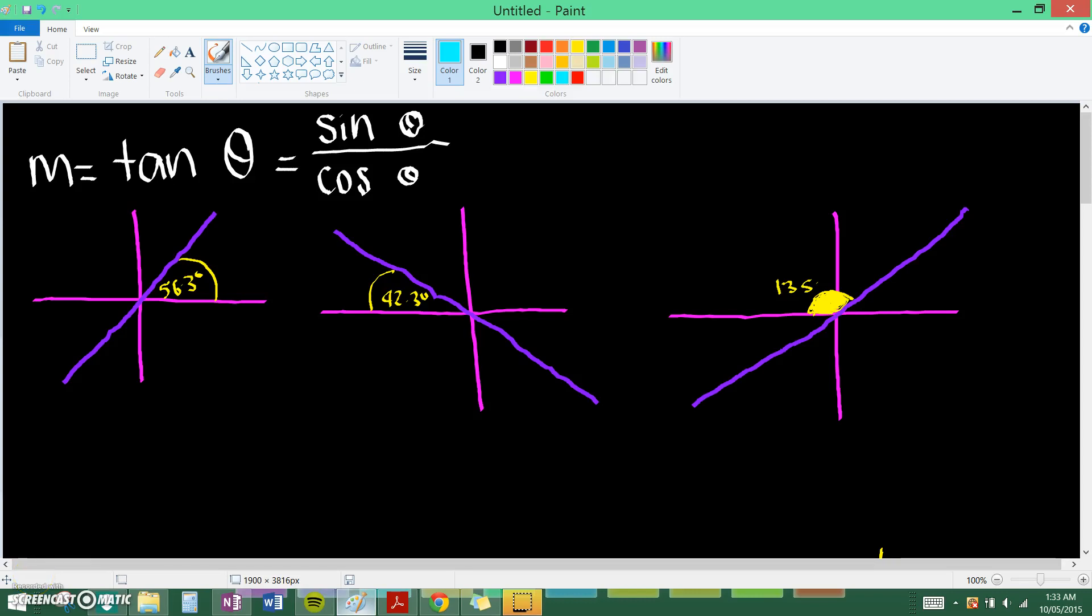This video will talk about how to find the gradient of a line, also known as slope, only being given one angle. You should know that the gradient of a line is equal to tan theta, which would be this angle, the yellow angle. I'll highlight that yellow. And we also know that tan theta is equal to sin theta over cos theta, so this is another way that you can figure out the gradient.